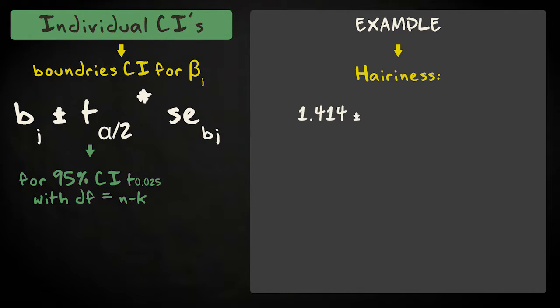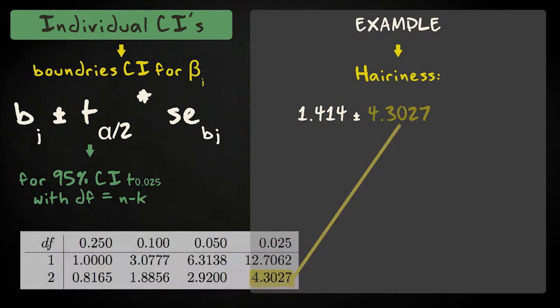To obtain the 95% confidence interval for hairiness, we take the regression coefficient, 1.414, and subtract and add t, which equals 4.3027, times the standard error, 1.045.